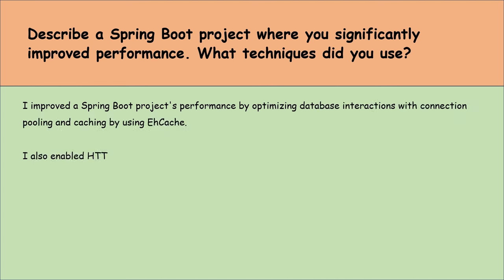How would you manage and monitor asynchronous tasks in a Spring Boot application, ensuring you can track task progress and handle failures? I would integrate with a messaging system like RabbitMQ or Apache Kafka. First, add the necessary dependencies in the pom.xml or Gradle file. Then configure the connection to the message broker in properties or YAML file, specifying details like host, port or credentials. Next, use Spring's @EnableMessaging annotation to enable messaging capabilities and create a bean to define the queue, exchange and binding. To send messages, autowire the KafkaTemplate and use its send or convertAndSend method, passing the message and destination.